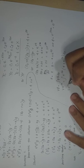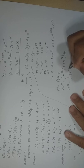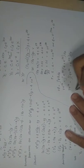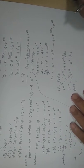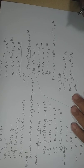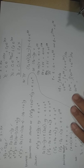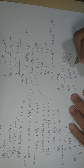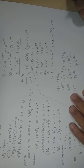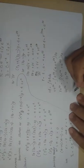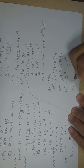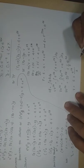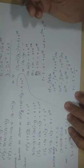Distributing: V·e^(2z) = ∫(4e^(2z) + e^(4z)) dz = 2e^(2z) + (1/4)e^(4z). Dividing everything by e^(2z): V = 2 + e^(2z)/4.